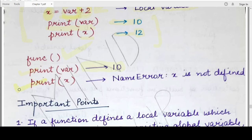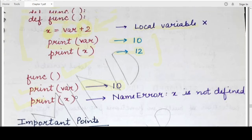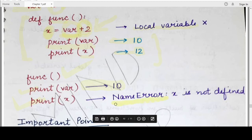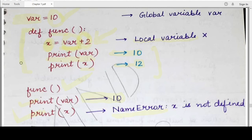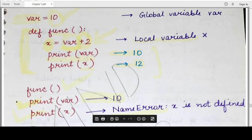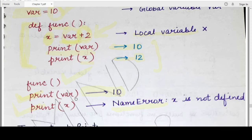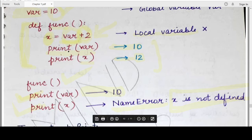Now, there is an interesting case: if you try to print x after the function call, the program does not know what x is and will result in a name error. This is because the scope of x was limited to that particular function. As soon as the function call terminated and control transferred to the statement following the function call, x no longer exists. That is why the interpreter will show a name error saying x is not defined. If you had printed x inside the function, there would have been no error — 12 was easily printed inside the function.